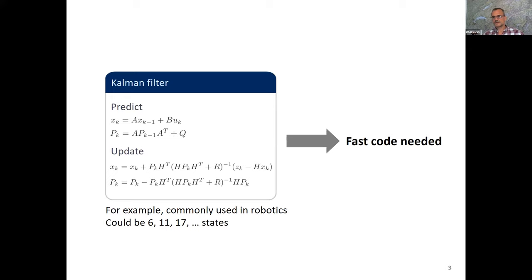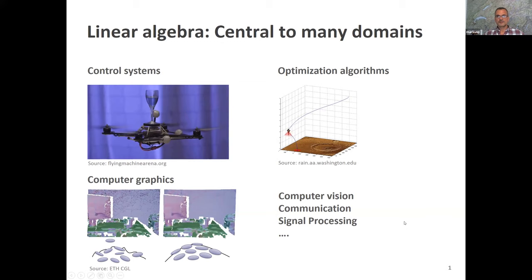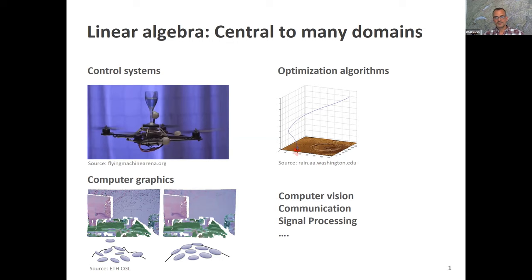So the linear algebra computations in the Kalman filter are very small-scale — matrices may have size six-by-six or eight-by-eight. However, it is often used in real-time environments alongside other computations running on the processor. Just like for large scale, you need fast code and fast implementations, but it's small-scale linear algebra. And in many domains — control, optimization, machine learning, scientific computing — you very often deal with small-size matrices and vectors.